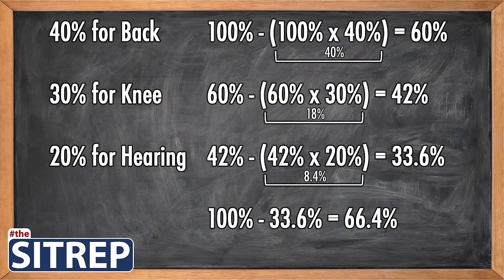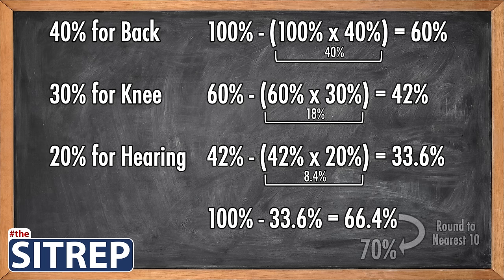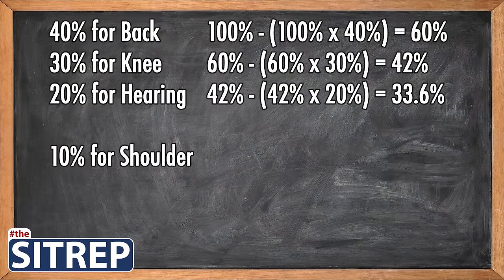Now that we have calculated each disability, we subtract the remainder from 100%: 100% minus 33.6% equals 66.4%. However, VA always rounds to the nearest 10, so in this case your disability rating would be rounded up to 70%. This is important to keep in mind — yes, you are rated at 70% disability, but your actual rating is 66.4%. Say you later receive a 10% rating for your shoulder.